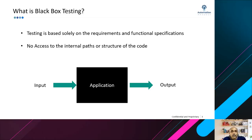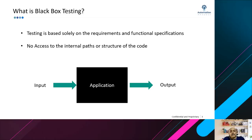The only thing you will verify is the output — based on what inputs you give to the application, you verify whether the application handles those inputs and gives you the required output. For example, if you're dealing with a ticket reservation application, you give inputs to book a ticket, and once booked you get a confirmation message. If there are errors in the inputs, you get an error message. You don't know how the developer coded this, but based on the requirement specification you verify whether ticket booking is happening or not.